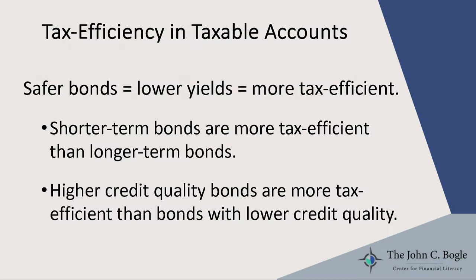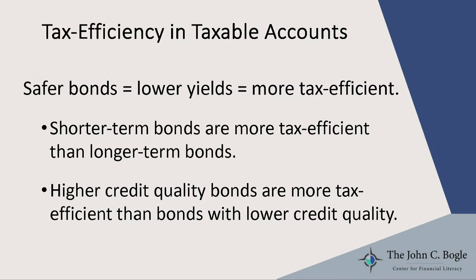Moving on to the bond side of the portfolio: the general rule is that safer bonds have lower yields, because riskier bonds have to pay a higher interest rate to get people to buy them. Safer bonds have lower yields, which means less taxable income, less tax, and therefore more tax efficiency. So safer bonds tend to be more tax efficient than riskier bonds. Short-term bonds tend to be more tax efficient than long-term bonds because short-term bonds usually pay a lower rate of interest — there are exceptions, but typically short-term bonds are a better fit for a taxable account. Similarly, bonds with better credit ratings are more tax efficient than bonds with worse credit ratings.